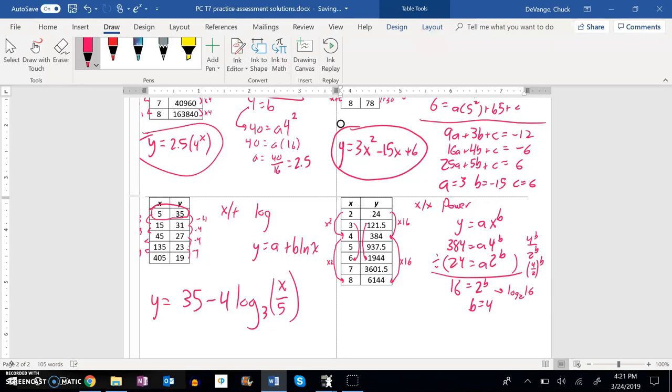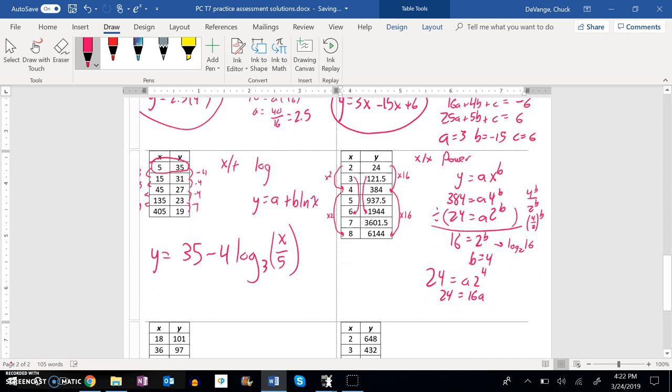So let me plug that back in and get my a value. I'll plug it into this one. 24 equals a times 2 to the 4th power. So let's see, 2 to the 4th power. 24, I just did that, is 16. 24 is 16 times a. So then I can go 24 divided by 16 to get my a value. And that's 1.5. Great.